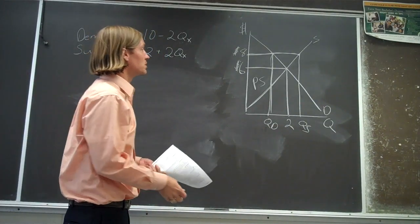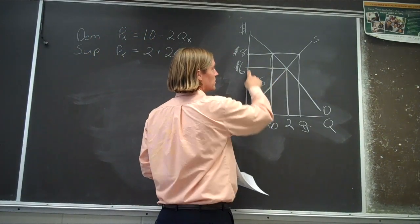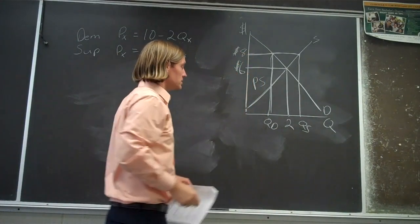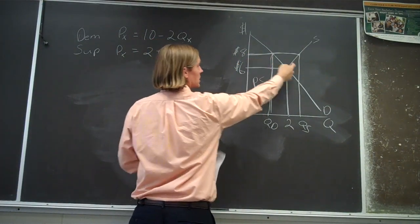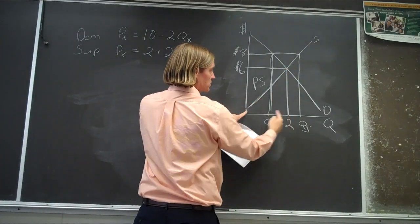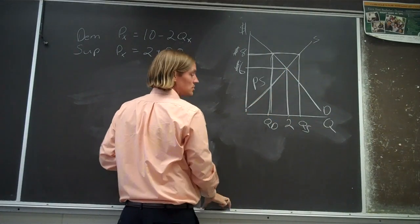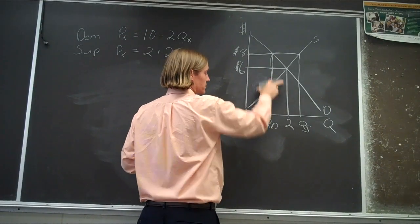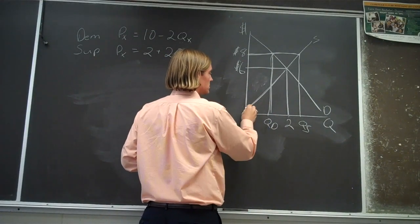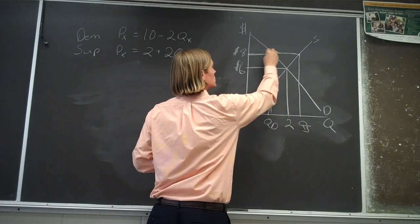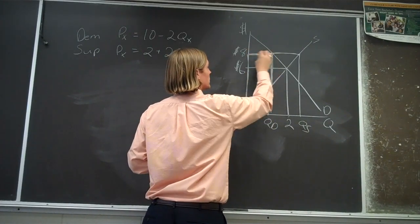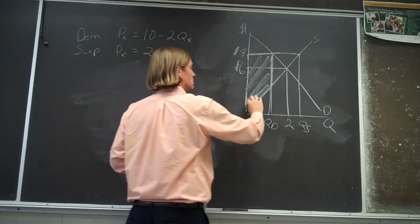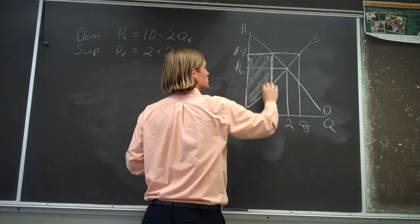So what's the producer surplus? Well, now it's no longer this triangle. They're getting paid a higher price, but they're selling fewer units — not this many units, only this many units. The producer surplus is now this area instead. There's your producer surplus.